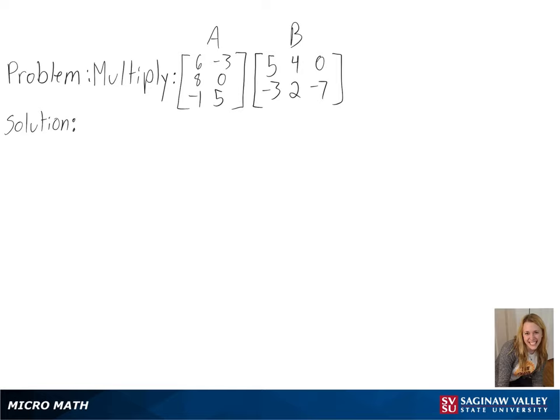Our problem is to multiply matrix A by matrix B. To be able to multiply matrices, the number of columns in the first matrix has to equal the number of rows in the second matrix. We can see here that this is the case since they both have 2.